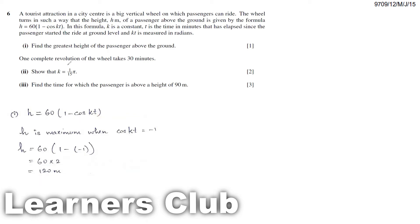One complete revolution of the wheel takes 30 minutes. That means the time period is 30 minutes. If a passenger is starting from here to get back to the same place, that is one complete revolution, it takes about 30 minutes.